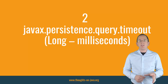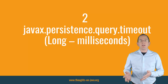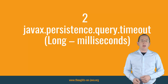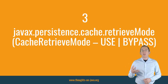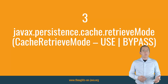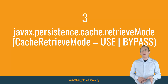Hibernate doesn't handle this timeout itself, but provides it to the JDBC driver via the JDBC statement's setTimeout method. The javax.persistence.CacheRetrieveMode hint supports the values Use and Bypass. It tells Hibernate if it shall use the 2nd-level cache to retrieve an entity or if it shall bypass it and get it directly from the database.